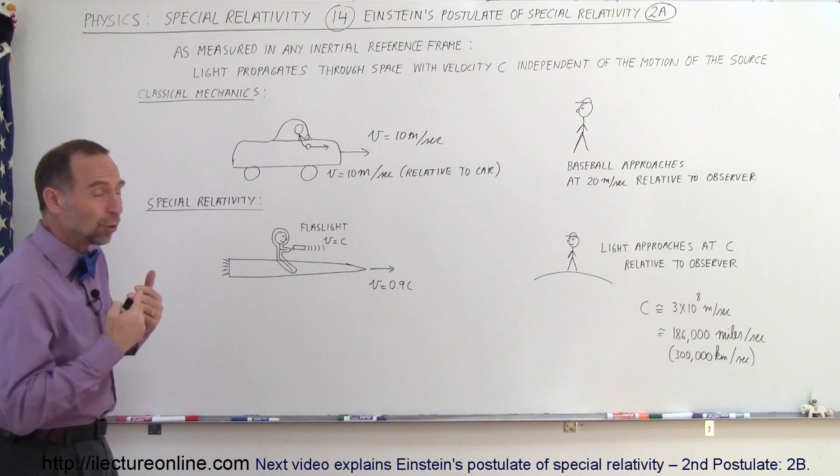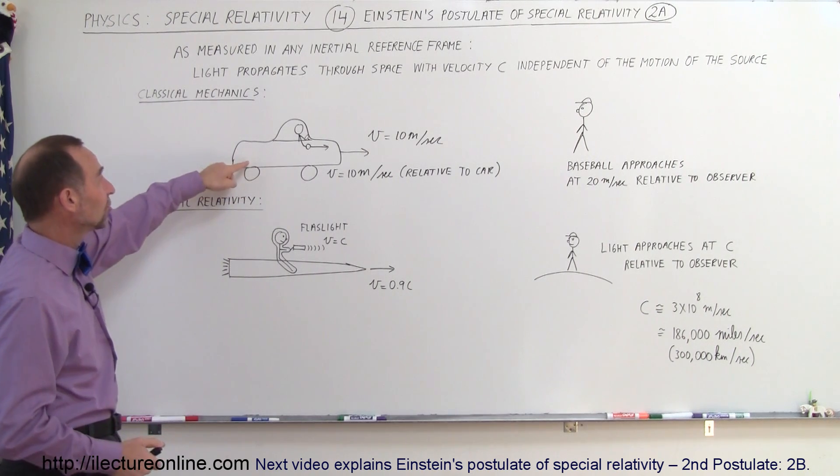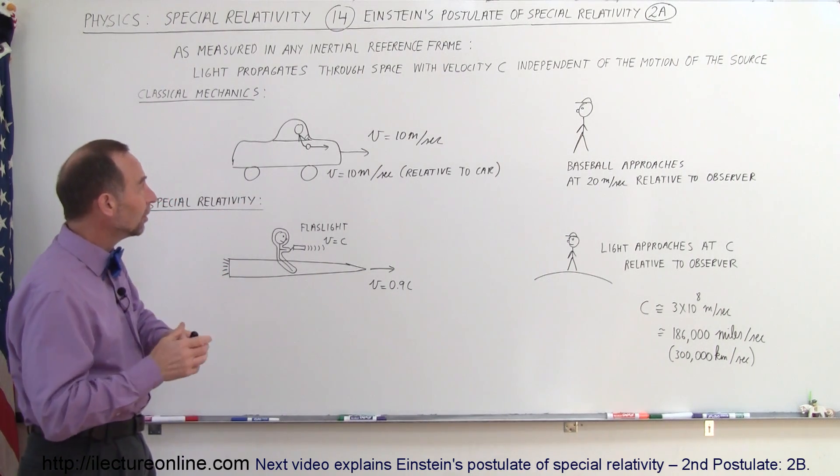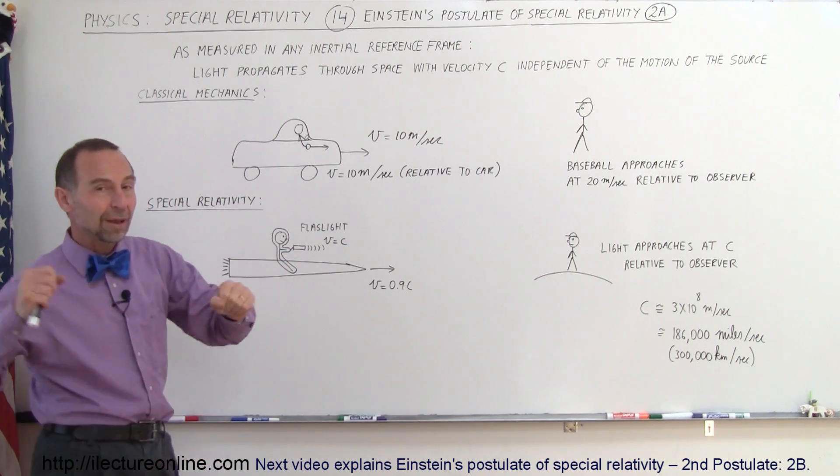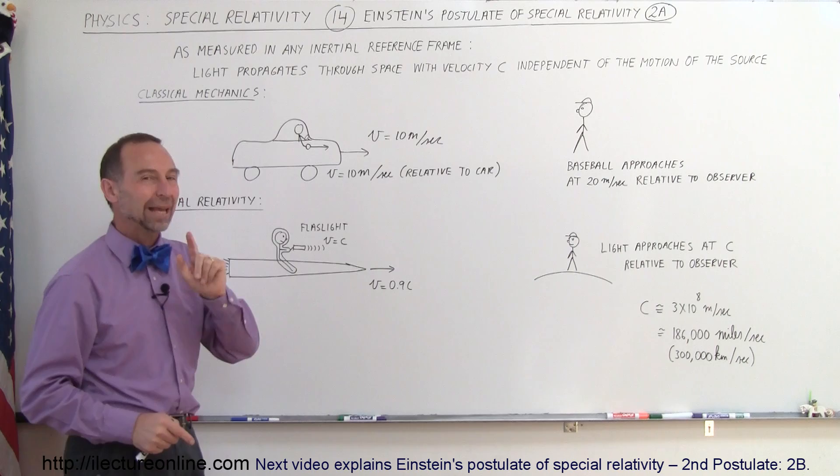What we're normally used to in our daily life, and this is what we'd call classical mechanics, let's say somebody's driving his fancy car, and he opens up the window and takes a baseball, and while the car is driving at 10 meters per second, he's throwing the baseball out forward at 10 meters per second relative to the car.